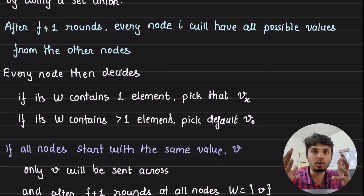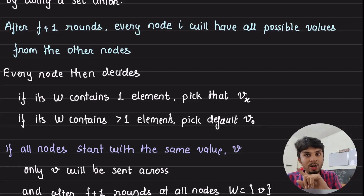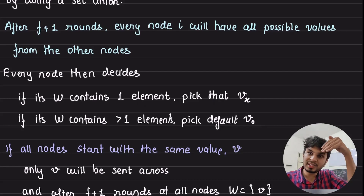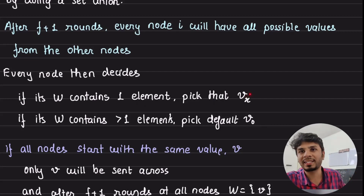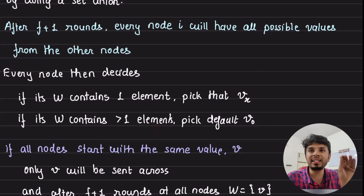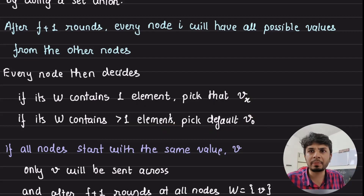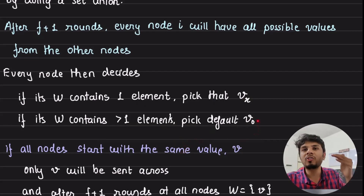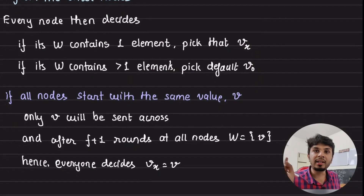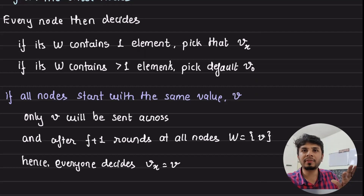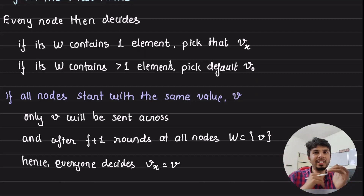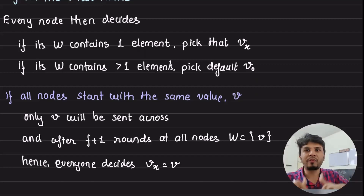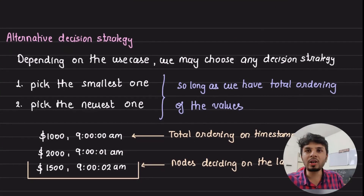Once every node has the same complete information, all they have to do is decide. If W contains just one element — meaning all nodes were proposing the same value from the start — they pick that single element. If W contains more than one element, nodes cannot agree on which to pick, so they fall back to the default value V0. This way, if all nodes start with the same value V, after f plus 1 rounds W would contain just V at every node, and every node independently decides on V as the final value.